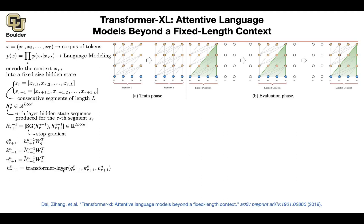And then you're going to do your masking, because this is the decoder part of the transformer. So you do the transformer layer — the decoder part — with proper masking and query-key-value. The query is coming from the segment you're interested in, and the key and value are going to include the history.